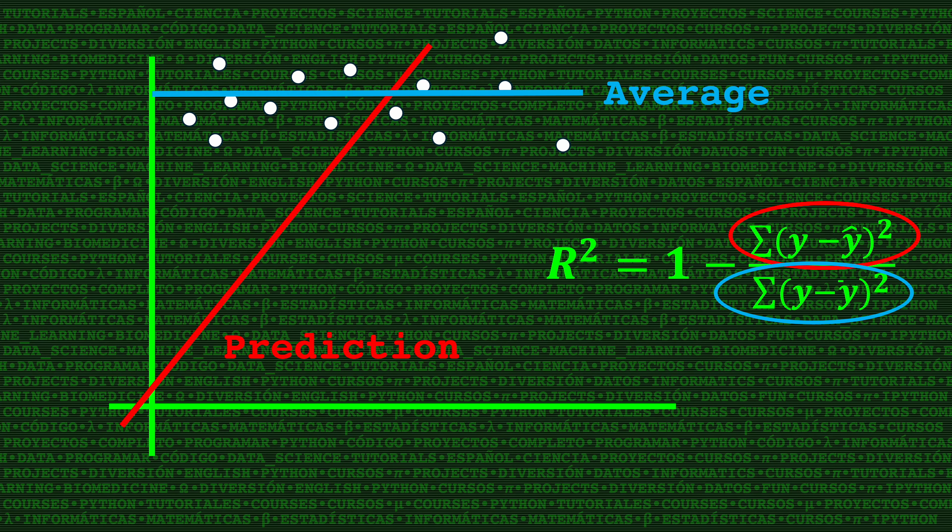Here's an example of what this could look like. See how this average line is a lot closer to the actual y-values than the predicted line?